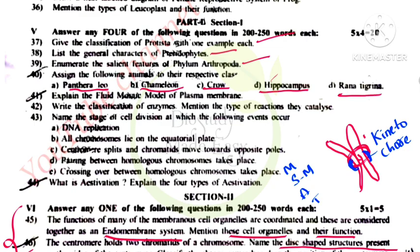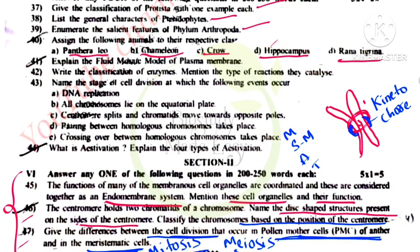Rana tigrina belongs to Amphibia. So the classification goes: chordates, Pisces, Amphibia, Reptilia, Aves, Mammalia. Next, the fluid mosaic model of the plasma membrane is an important question. Classification of enzymes — this question appears in the paper; you can read the complete notes in the Telegram channel. Classification of enzymes is very, very important.